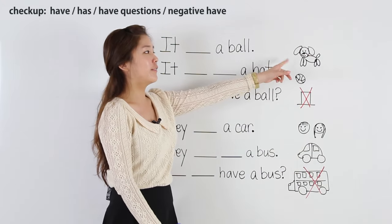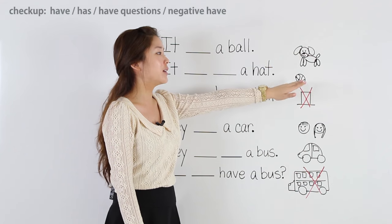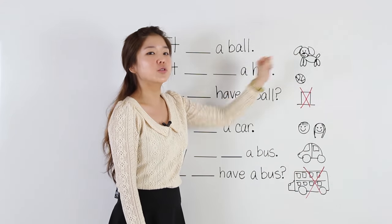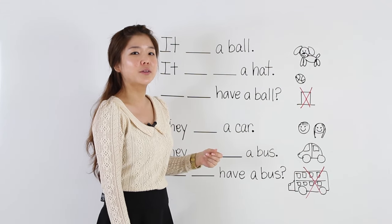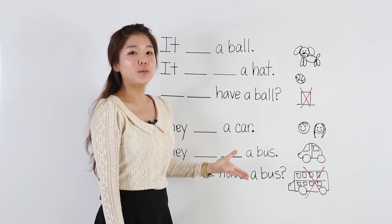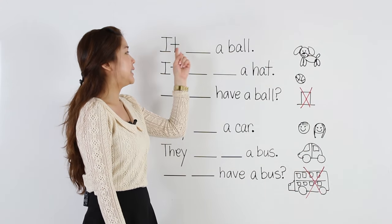Here we have a picture of a dog and a ball. And this ball belongs to this dog. So let's make a sentence about this picture. The dog is an animal, so we have to use it.